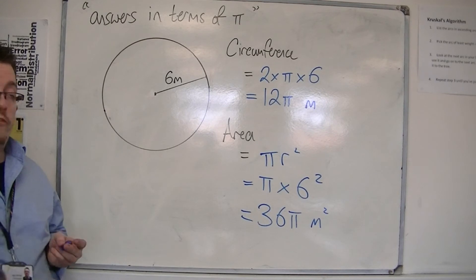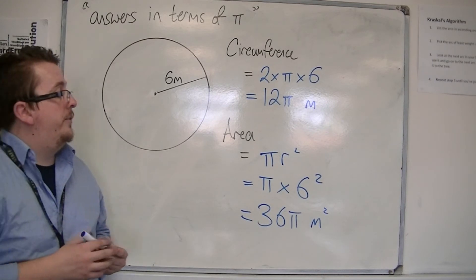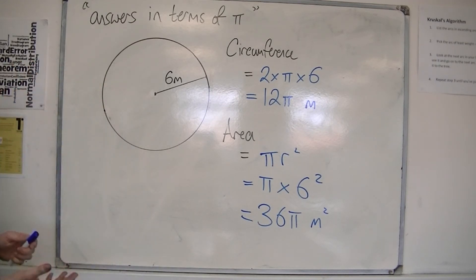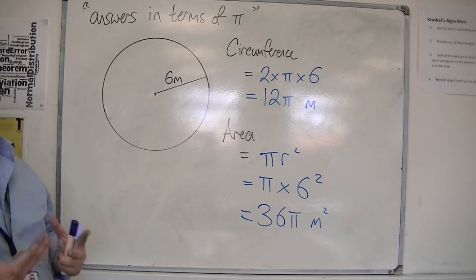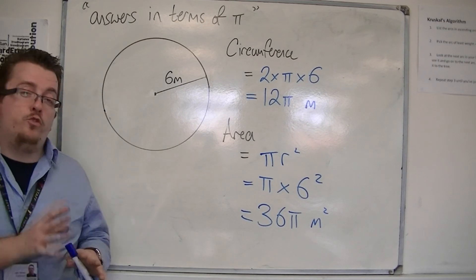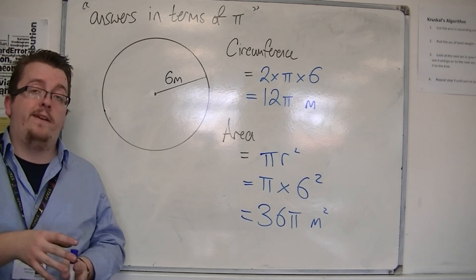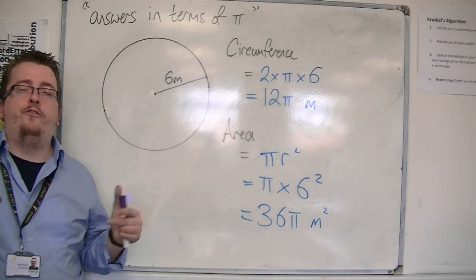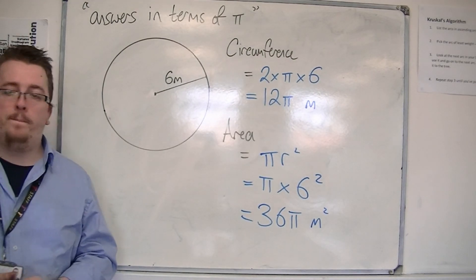So it's very straightforward, very simple to use. You could expect it on a non-calculator paper in this way. On a calculator paper, they're much more likely to try and get you to use pi on your calculator, or an abbreviated form like 3.142.